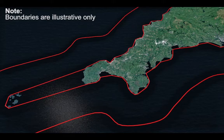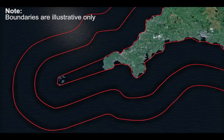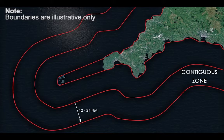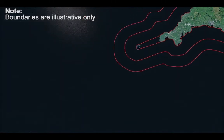The next maritime zone is the contiguous zone. The contiguous zone extends from the limit of the territorial sea at 12 nautical miles out to 24 nautical miles. Coastal states can impose regulations within the contiguous zone in order to prevent infringements of controls, laws, or regulations within the territorial sea. The contiguous zone effectively acts as a buffer to ensure that rules are followed within the territorial sea.